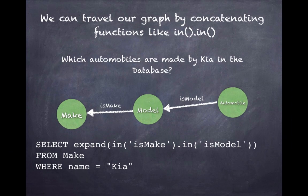We can travel our graph by concatenating functions like IN and OUT together. Let's say that we want to find which automobiles are made by KIA in the database. We'll notice from our schema that an automobile is a model, a model is a make. So if we look at an automobile record, we don't see which make or model it is. We have to travel the graph to find this information.